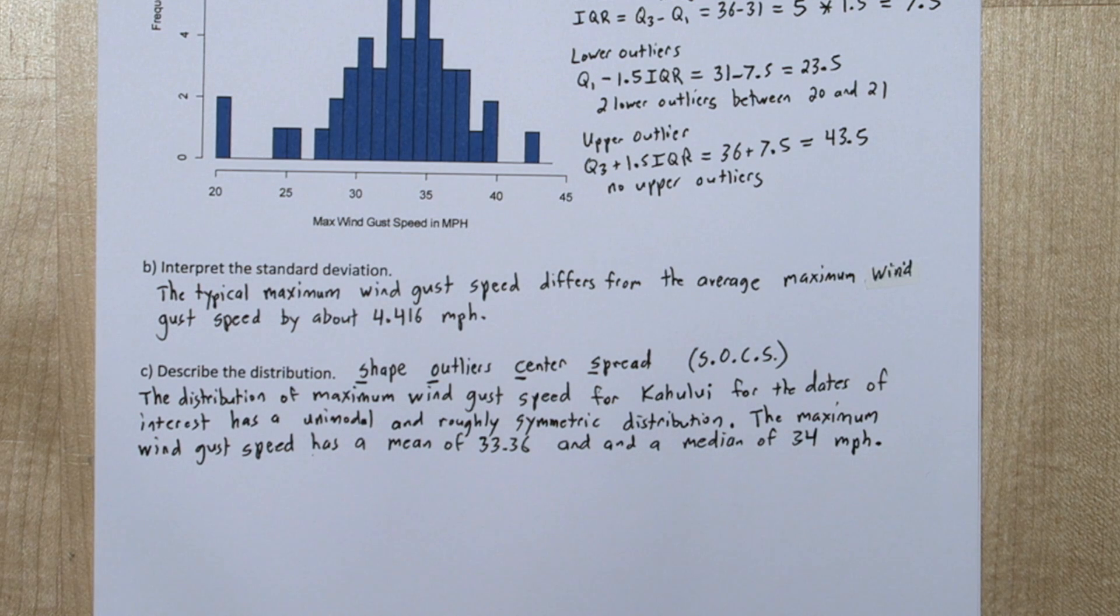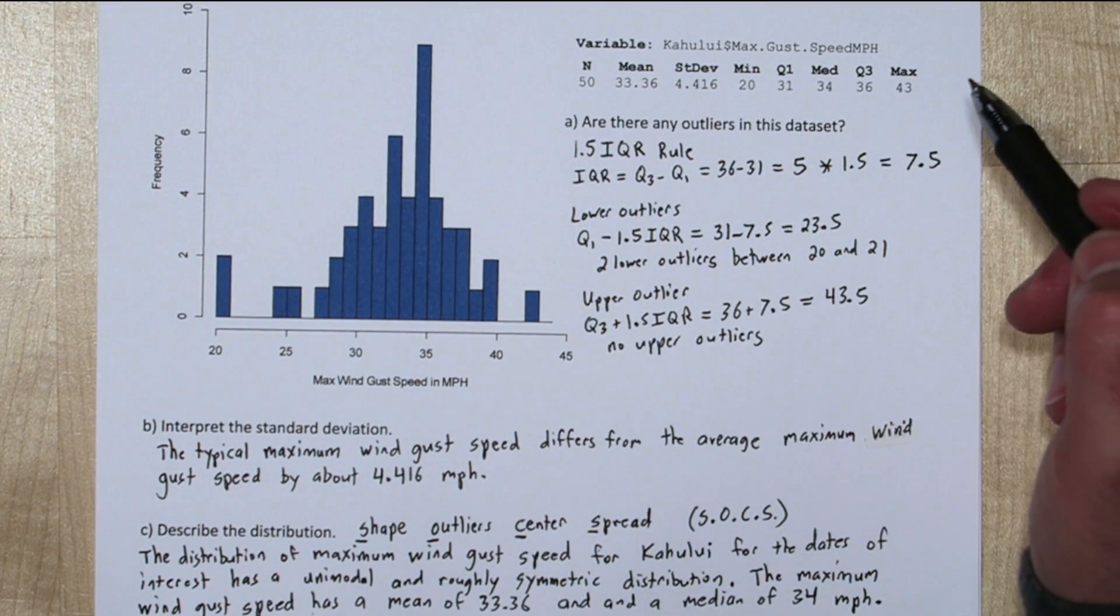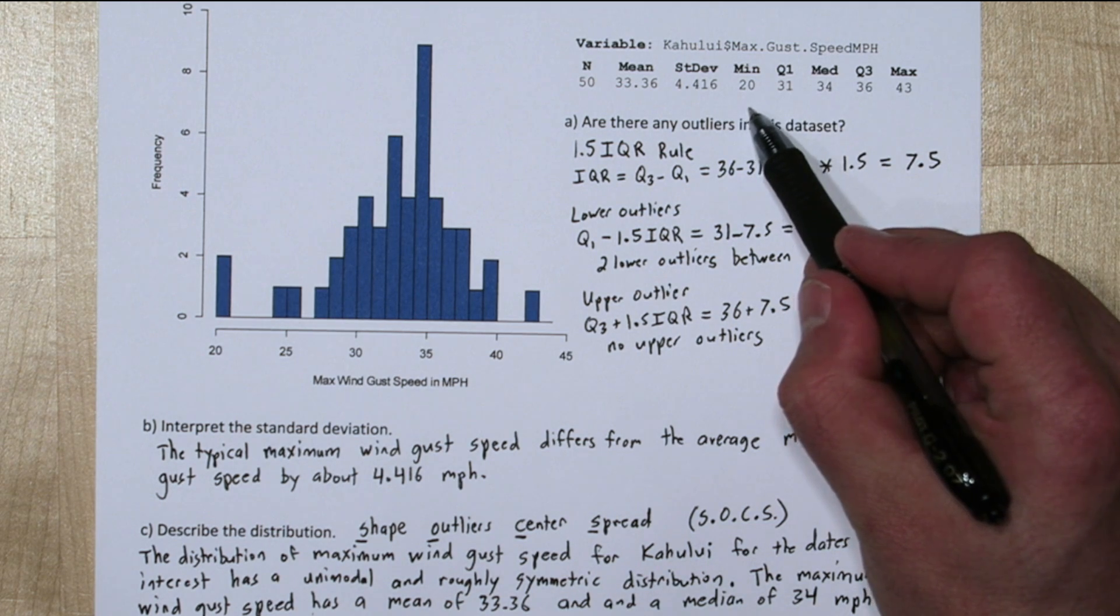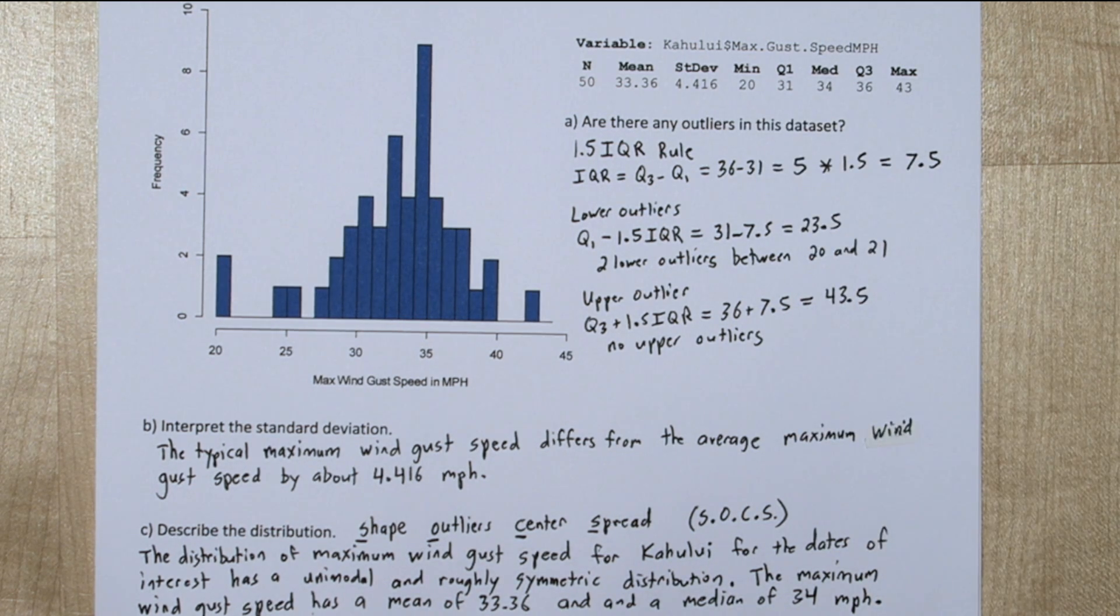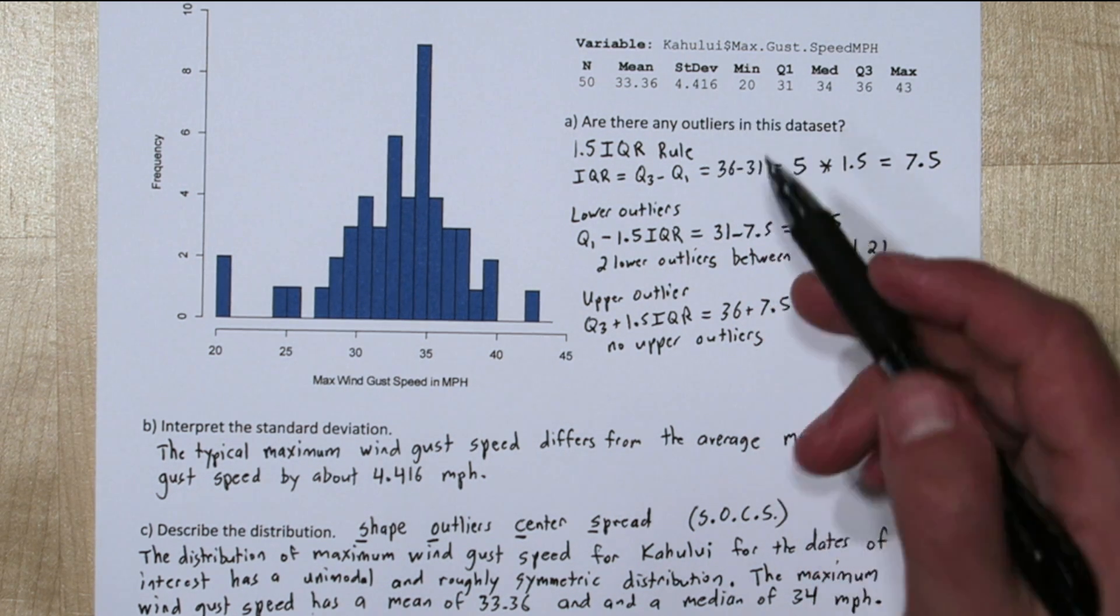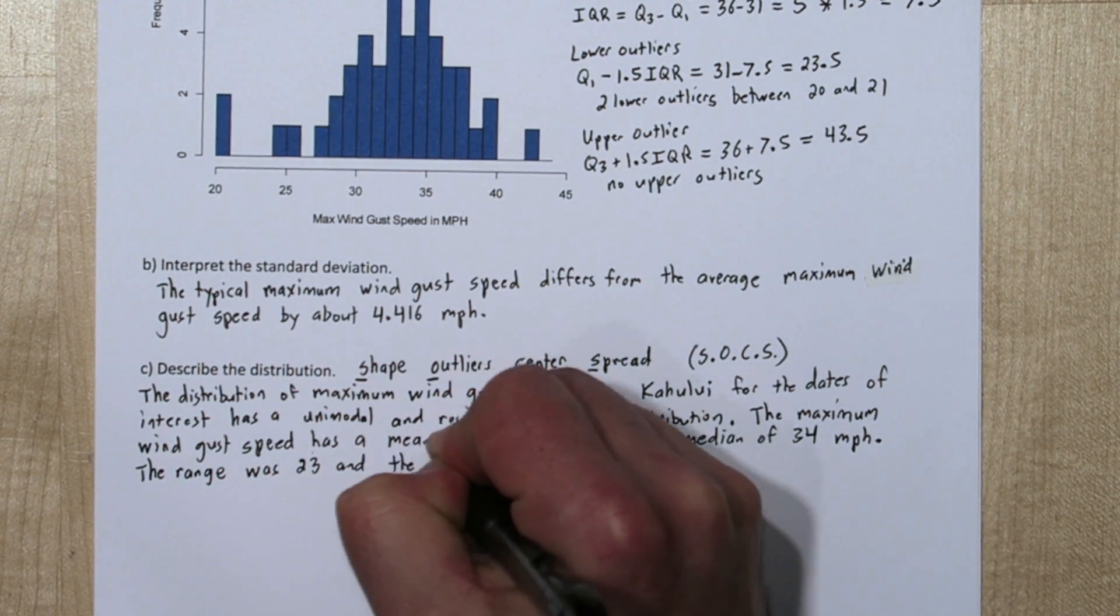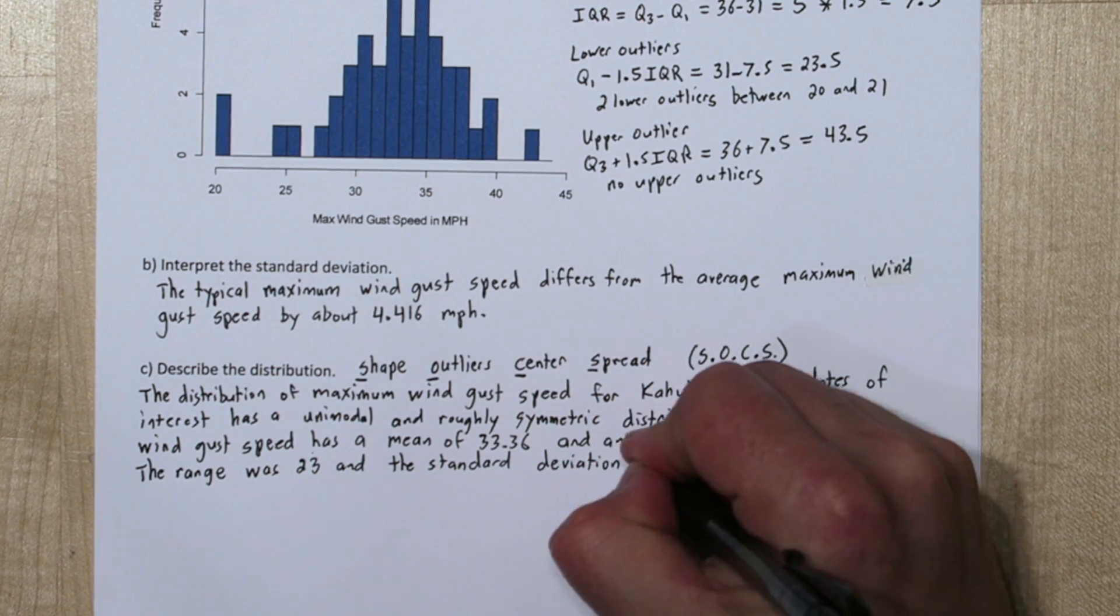Next we'll talk about spread. From the computer output we can calculate the range, the maximum was 43 and the minimum was 20, so that means the range is 23. We also have the standard deviation, which is another measure of spread. Let's report both of them.